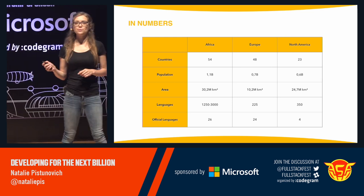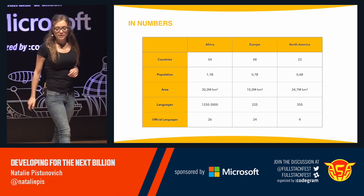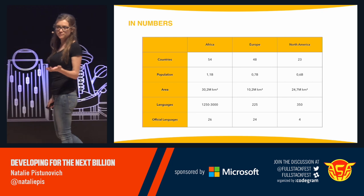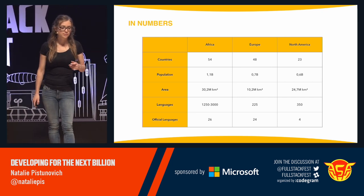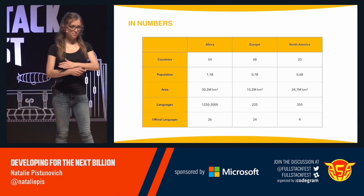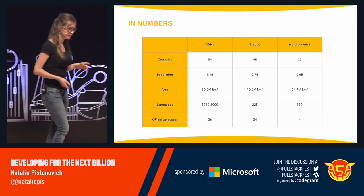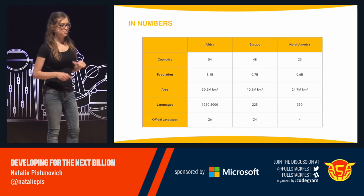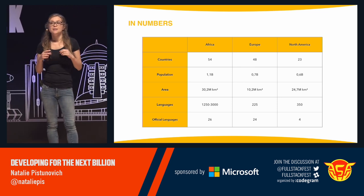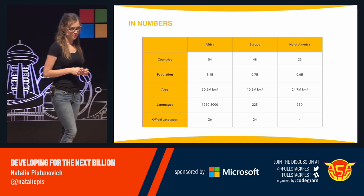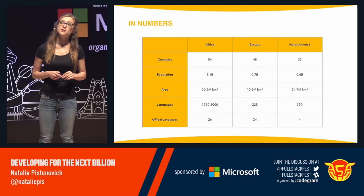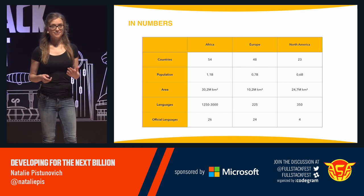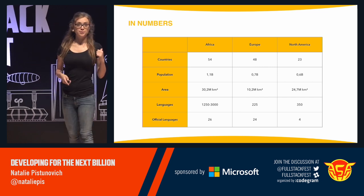Another interesting thing: languages. While five languages is the official number you need in North America, and in Europe there are officially 24, in Africa the situation is very different. While officially there are 26 languages, in practice there are a few thousands of languages in use. The range is so large because linguistic researchers are still debating what is a language versus what is a dialect. Just remember this number — we're going to use it later.